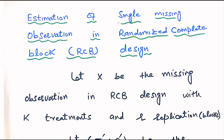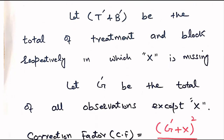Let x be the missing observation in randomized complete block design with k treatments and r blocks. Blocks are so called replications. Let t' and b' be the total of treatments and block respectively in which observation x is missing. If observation x is not missing, then we call t for treatment total and b for block total. But because in this question we have one observation missing, so we give the name for treatment total t' and for block total b'.